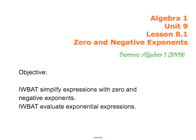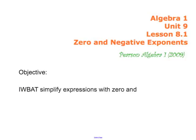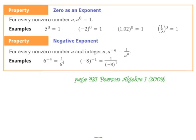To evaluate exponential expressions, we need to work with zero and negative exponents. They are properties — we have two properties here. The first property is zero as an exponent. For every non-zero number a, a to the zero is equal to 1. Any number that's not zero, raised to the zero power, is equal to 1.